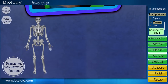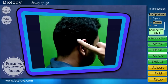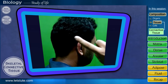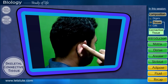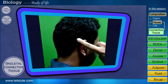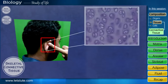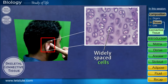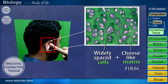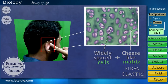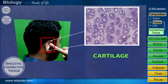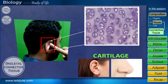There's one more tissue in this type. Have you ever tried folding your ear lobe? It bends easily, because the cells here are widely spaced and the matrix is cheese-like, firm, and slightly elastic. This tissue is called cartilage. The ear lobe, nose tip, and many more such areas are made up of cartilage.